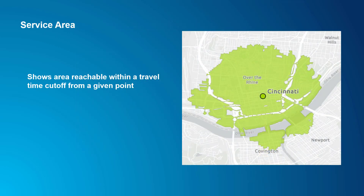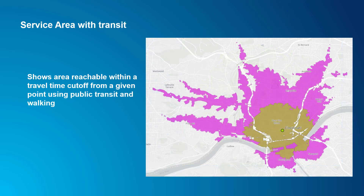We talked about the service area solver earlier when we talked about how to calculate the coverage of your transit system — the area within a short walk of transit stops. The service area solver allows you to put in one or more facilities and one or more cutoff times or distances, and it will generate polygons representing the area reachable within that limit. But earlier we were modeling people walking to and from public transit stops. What if you wanted to model a traveler who could both walk and take public transit? You could create a service area representing the area reachable within, say, a 30-minute travel time by any combination of walking or transit. Now we want to use the transit stops as part of the network itself, with the service area facilities being someone's home or work location.